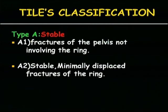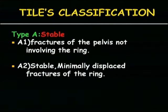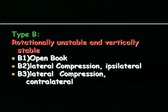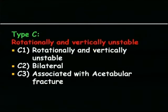After X-ray, you use Tile's classification to identify the fracture type. Type A is stable and requires only conservative management — a binder will suffice and the patient will heal. Type B is the most common: rotationally unstable but vertically stable, excluding vertical shear but including open book and lateral compression injuries. Type C is rotationally and vertically unstable, which typically represents vertical shear injuries.